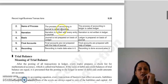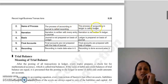The process of recording in journal is called journalizing. The process of recording entries into the ledger is called posting.